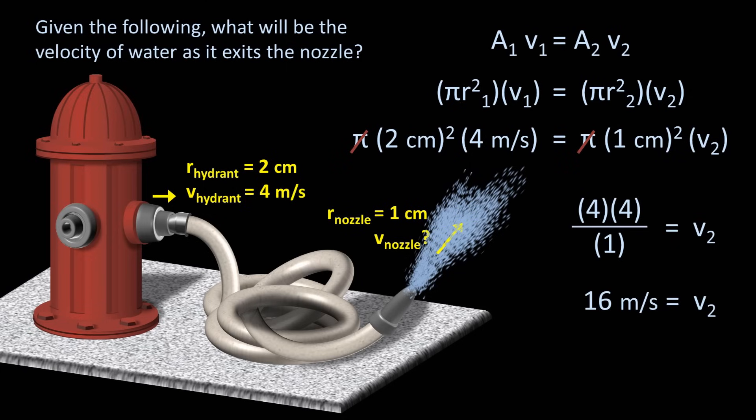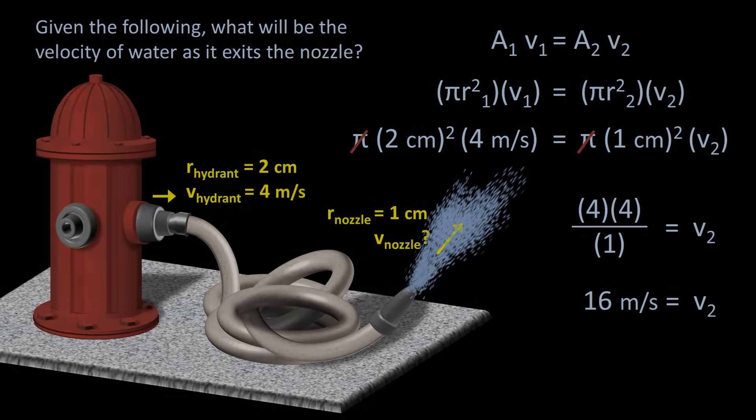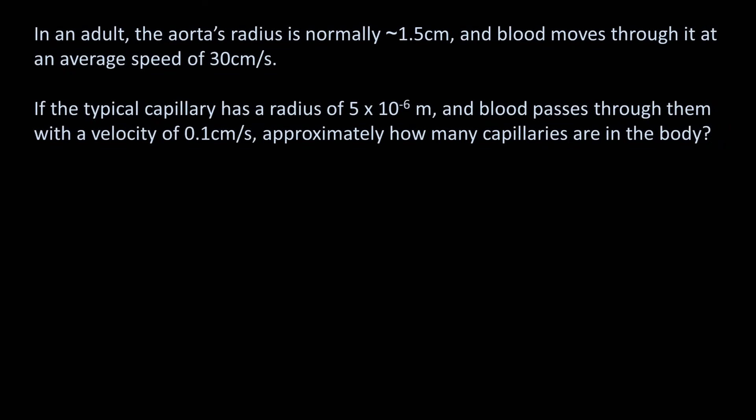Let's take an example that has a little more of a medical aspect. In an adult, the aorta's radius is normally 1.5 centimeters and blood moves through it at an average speed of 30 centimeters per second. If the typical capillary has a radius of 5 times 10 to the negative 6 meters and blood passes through them with a velocity of 0.1 centimeters per second, approximately how many capillaries are in the body?